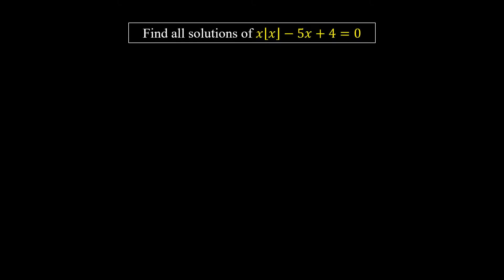Hello everyone. In this video we are going to find all the solutions of x times the floor value of x minus 5x plus 4 equals 0. To solve the equation, we will consider two forms of x.